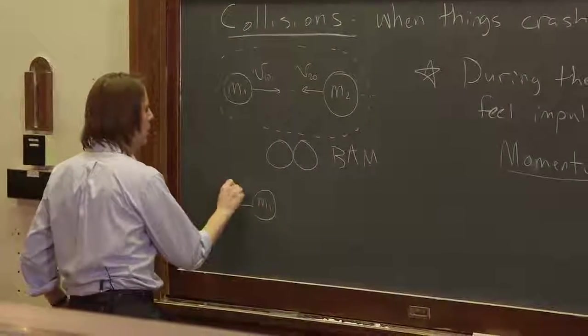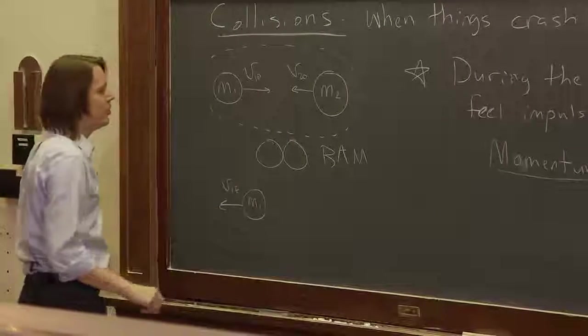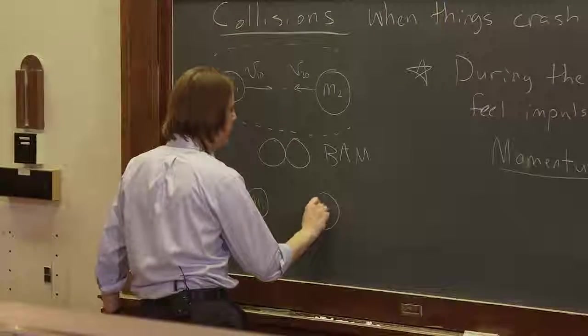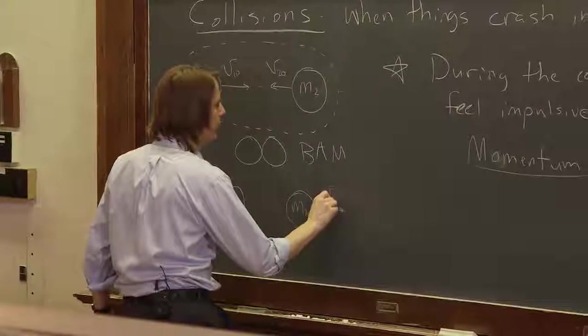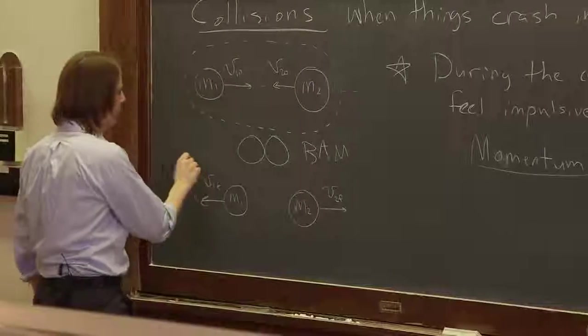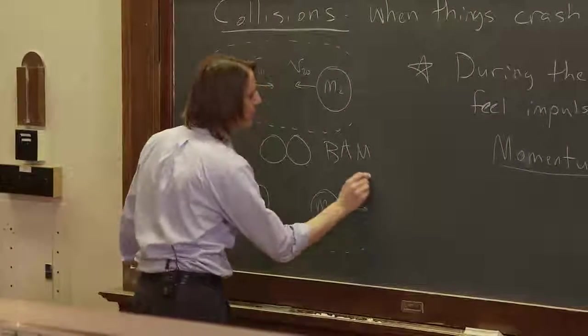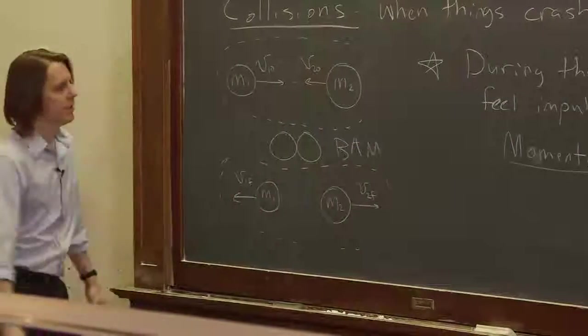But then after they hit, we want to think about that. So maybe m1 v1 final—maybe it goes back—and maybe m2 gets knocked and it goes forward, v2 final. So the final state might look like this for the isolated system. Okay.